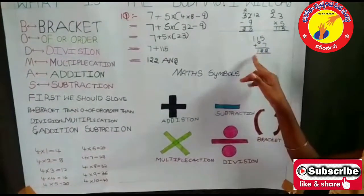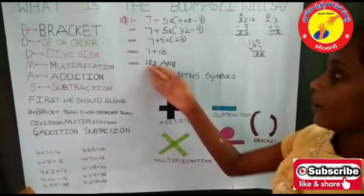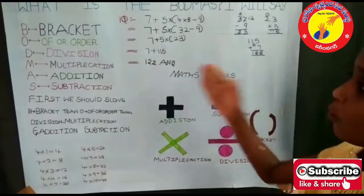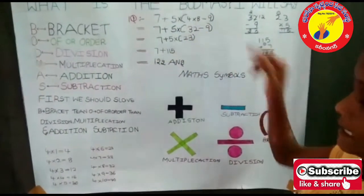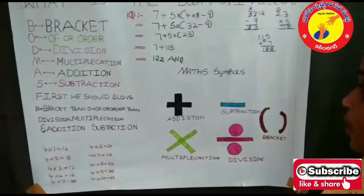Now any number is not there, so it is 1. So here you see the number is 122. 122 is the answer for 7 plus 5 into bracket 4 into 8 minus 9. The answer is 122.